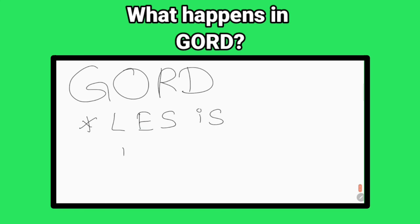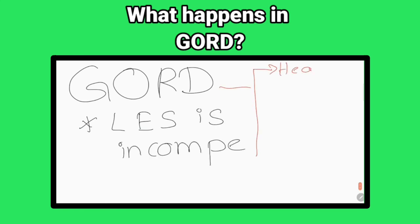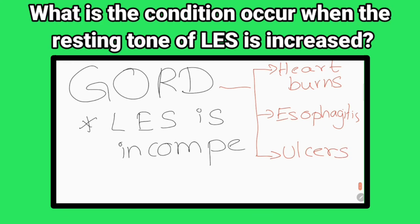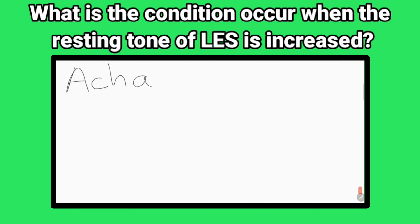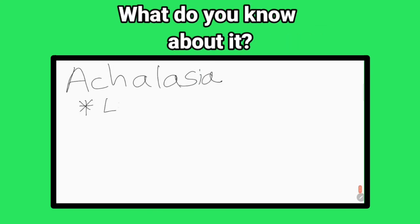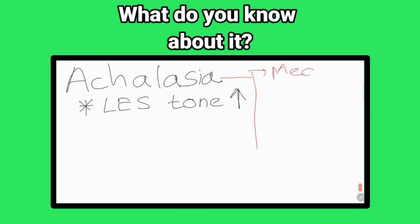What happens in gastroesophageal reflux disease? There is an incompetence of the lower esophageal sphincter, allowing reflux of gastric contents into the esophagus, resulting in heartburn, esophagitis, and ulcerations of the esophagus. What is the condition that occurs when the resting tone of the lower esophageal sphincter is increased? Achalasia. In this condition, food accumulates in the esophagus and the esophagus becomes massively dilated — called mega esophagus — and food particles may enter the respiratory tract, resulting in aspiration pneumonia.